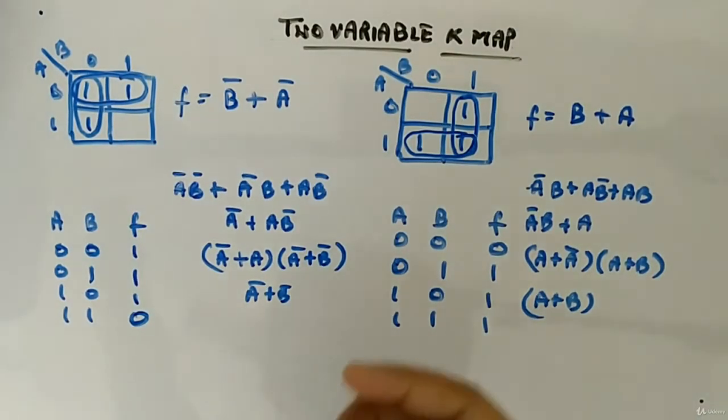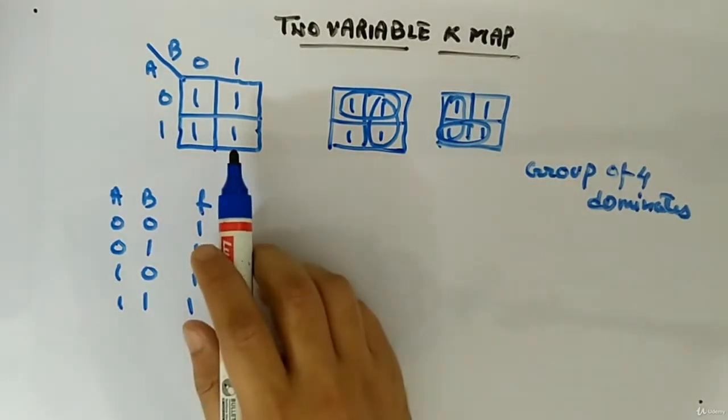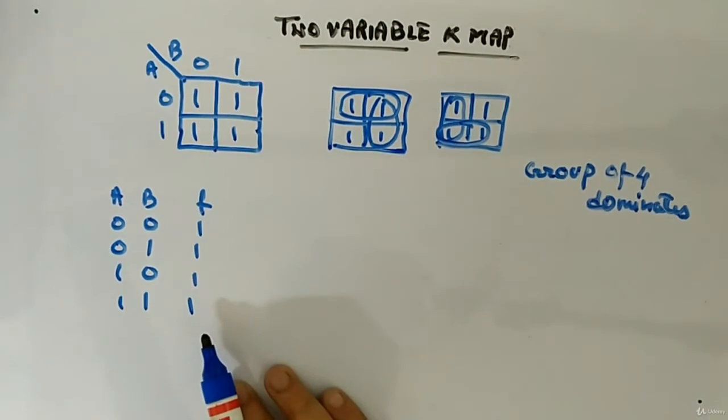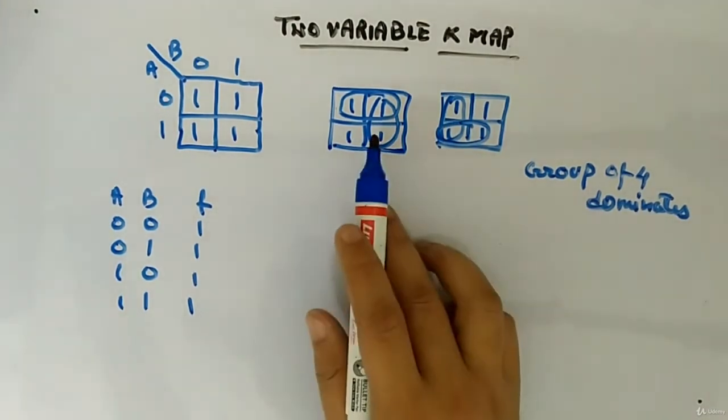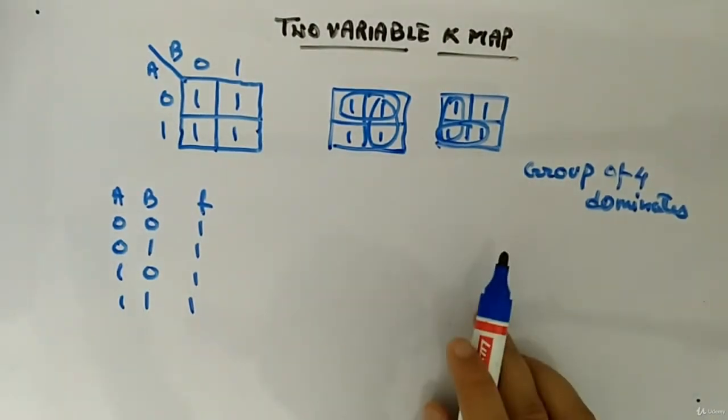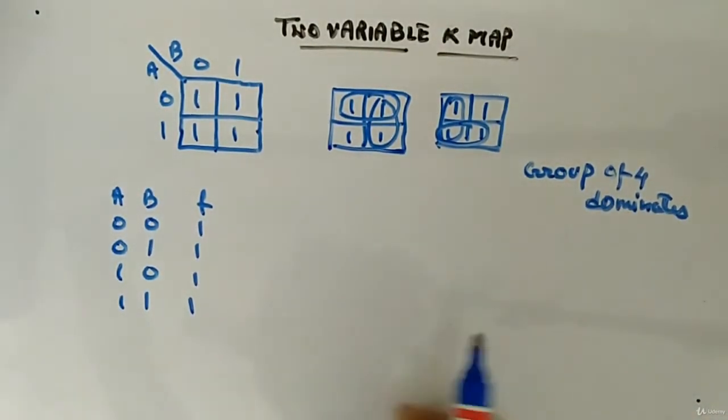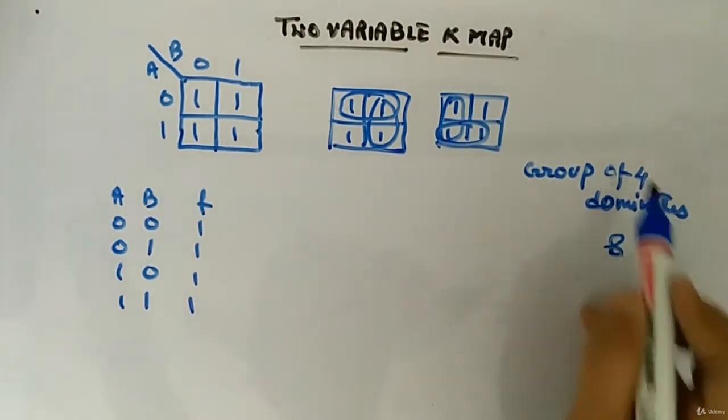Now we will go for if you have pair of four. In this also you can have pair of four. Now in the similar fashion you can see the pair of four. So here all the values of f are one. So you won't do something like pairing of two because the pair of four is possible, and always the pair of four will be dominating the pair of two. Likewise, pair of eight will dominate pair of four.